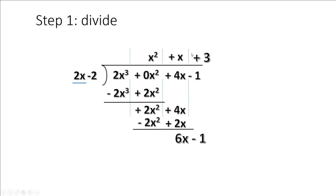2x times 3 is 6x. They're the same sign so it's plus. Multiply 3 times 2x minus 2: 6x minus 6. Subtract, change those signs. I've got 5 left over. There's nothing else to bring down.